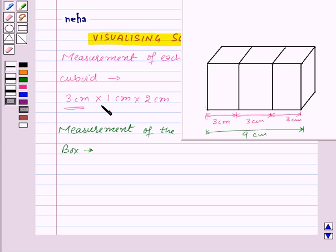Now width of each cuboid is 1 cm, so this will be 1 cm, which will be same for the box also. So the width of the box is 1 cm. And the height of each cuboid is 2 cm. So here this height is 2 cm. That means the height of the box will also be 2 cm. Thus the measurement of the box will be 9 cm by 1 cm by 2 cm.